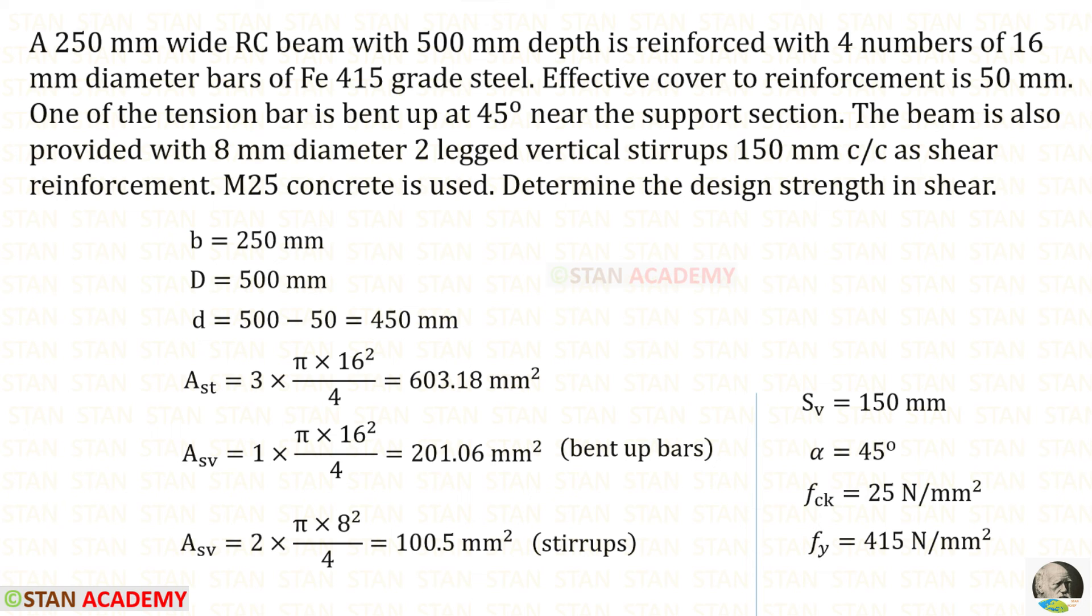Out of the four numbers of bars, one of them is bent up at 45 degree. We know that for AST, we have to only consider the straight bars. 4 minus 1, it will be 3. So, AST will be 603.18. For ASV, we have to only consider the bent up bar. Here, only one bar is bent up. So, 1 into the area of the rebar, we will get 201.06. The rest of the data is same.